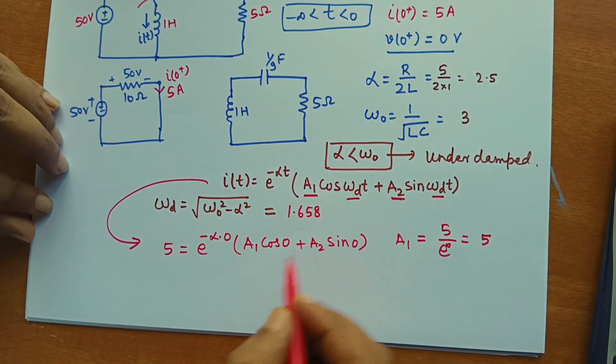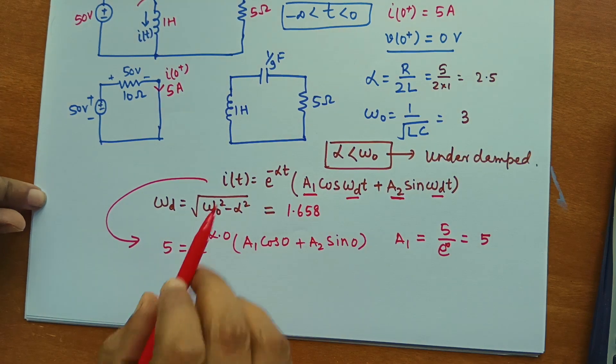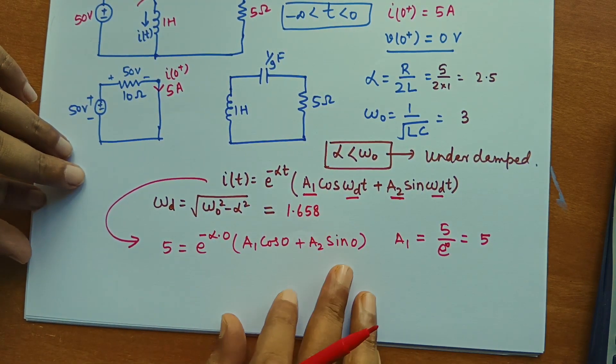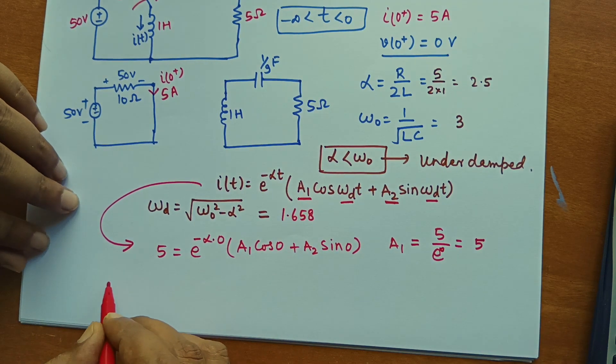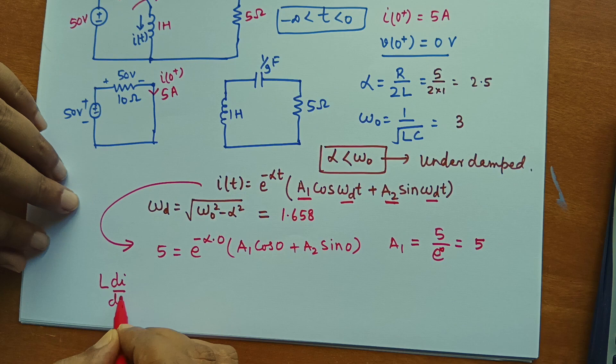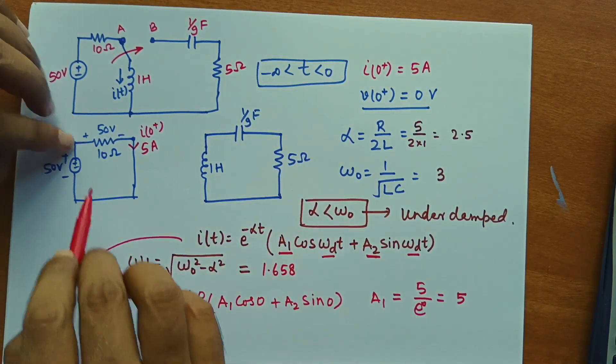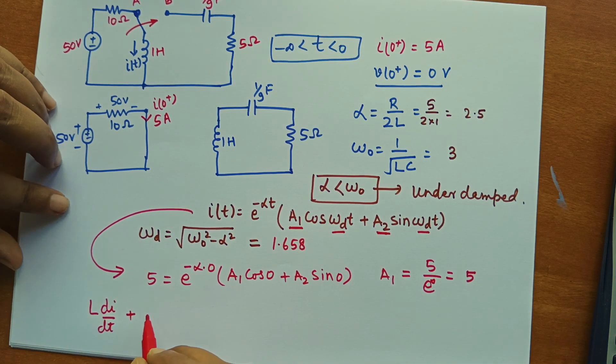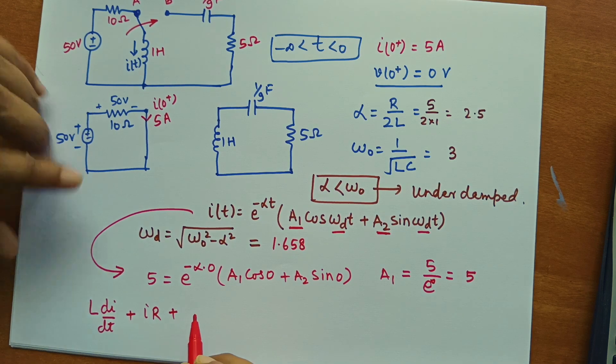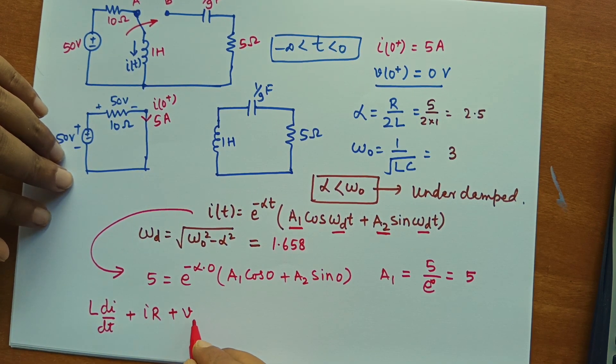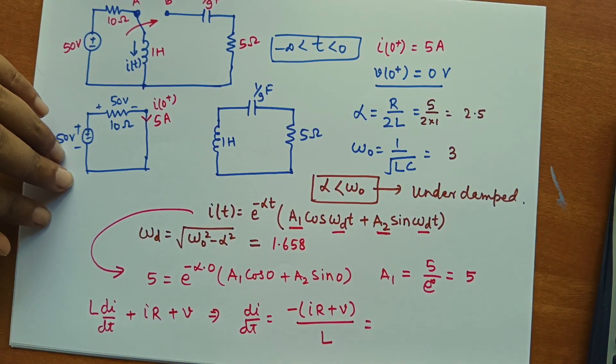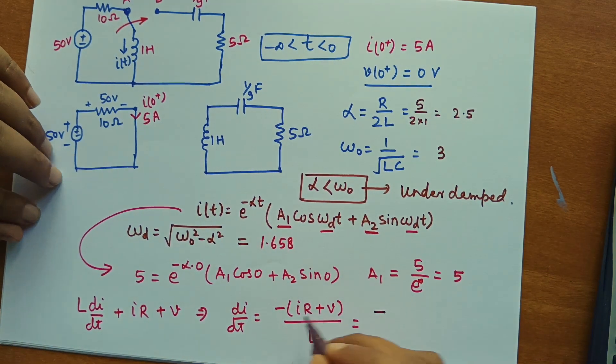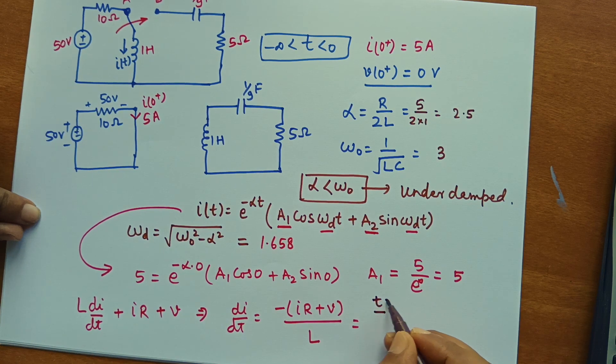So now we can calculate A2. For A2 we have to write expression for Di by dt. Then we can apply the boundary condition. So Di by dt can be calculated as we already know L Di by dt is the voltage across the inductor. Here voltage across the resistor is IR and voltage across the capacitor is already given by V.